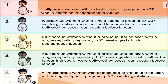Group four is also for multiparous women, with features almost similar to group two but differing in parity. In group two we had nulliparous women; in group four we have multiparous women without a previous uterine scar with a single cephalic pregnancy of more than 37 weeks gestation who either had labor induced or were delivered by cesarean section before labor.